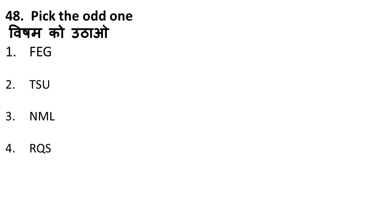Next question: pick the odd one out from — FEG, STU, NML, QRS. Looking at this: FEG can be rearranged as EFG — a sequence. STU is a sequence. QRS is a sequence. But NML — the correct sequence would be LMN, not NML. So the third one, NML, is the odd one out.